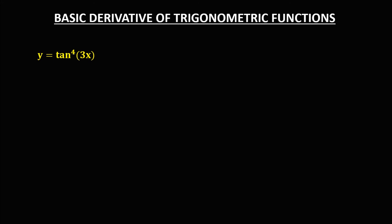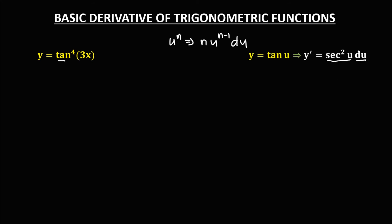For the next given, we use the chain rule: the derivative of u^n is n·u^(n−1) times the derivative of u. Since the given function is tangent, its derivative is sec²(u) times the derivative of u. We rewrite the given by putting the exponent outside: y = tan(3x) to the power 4.